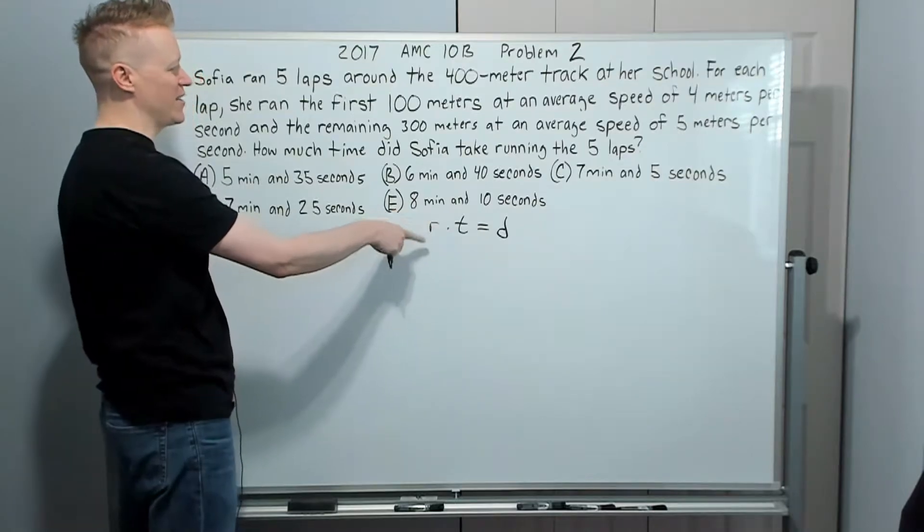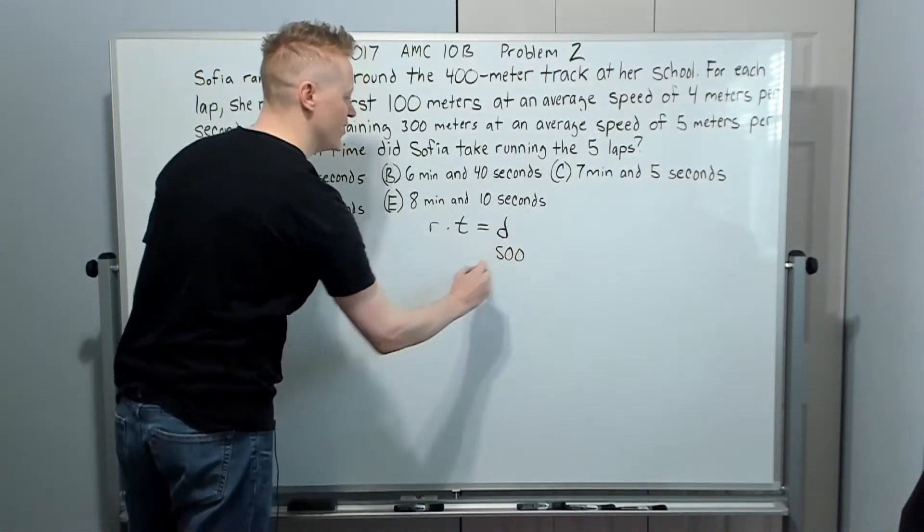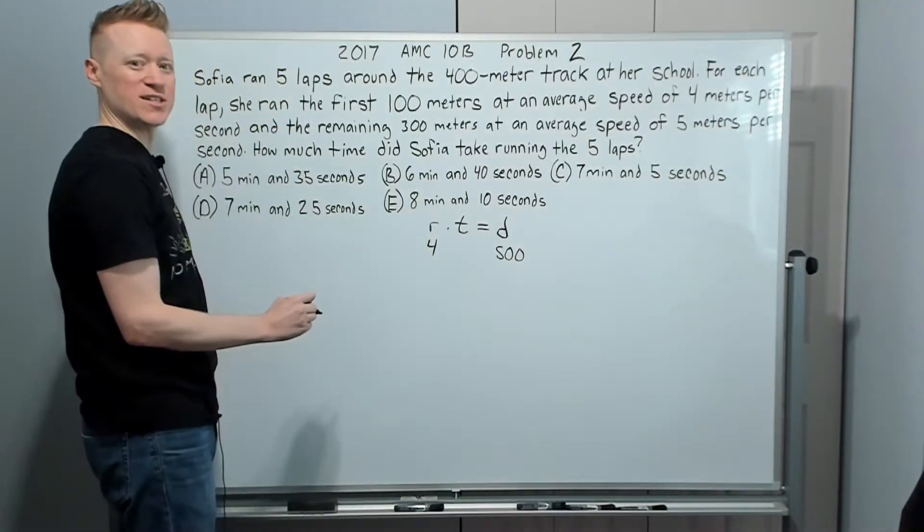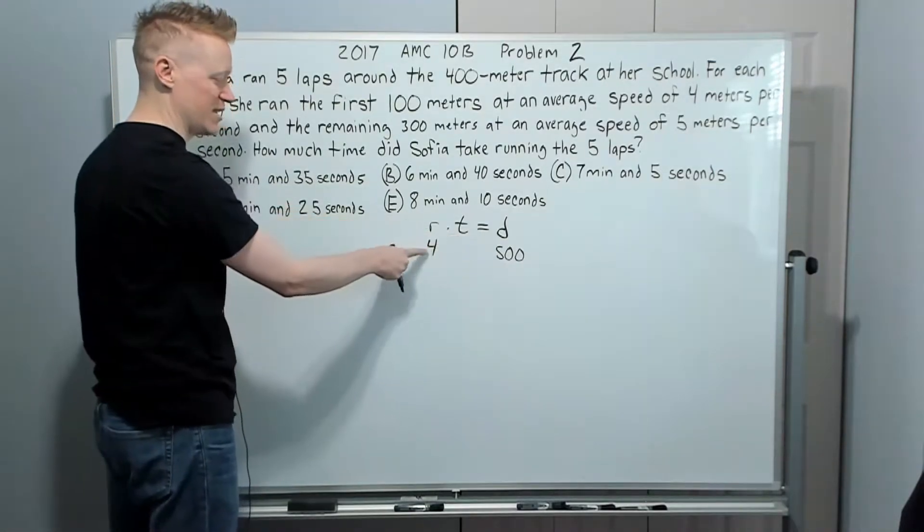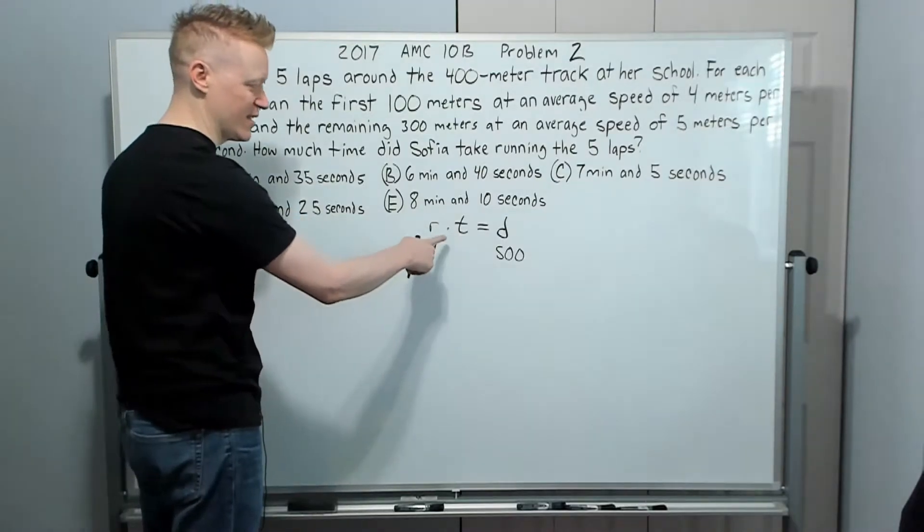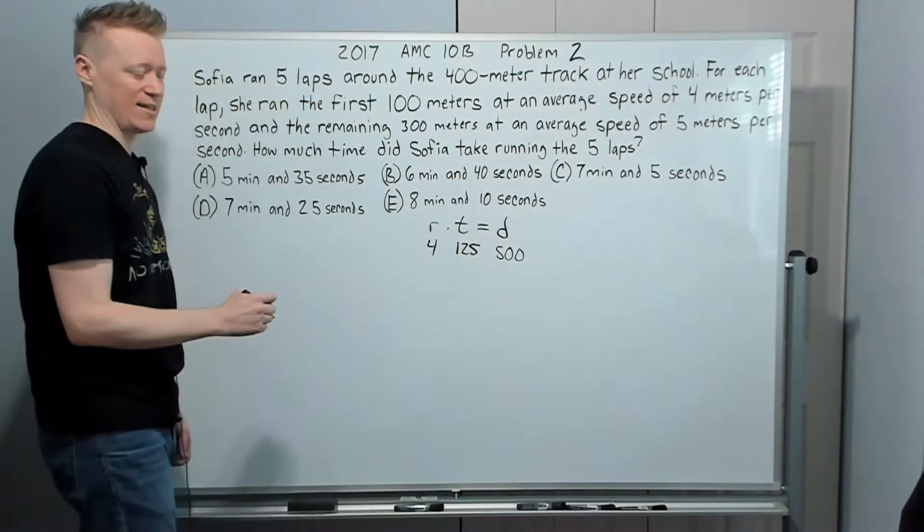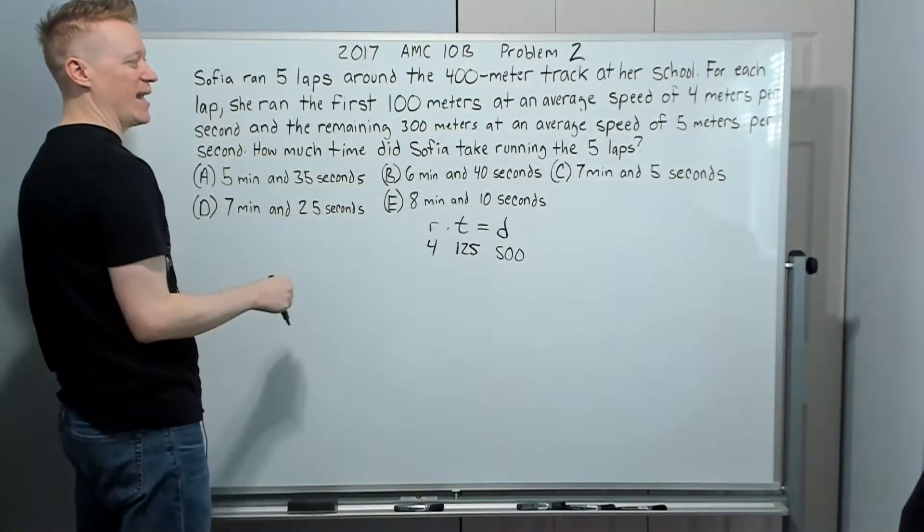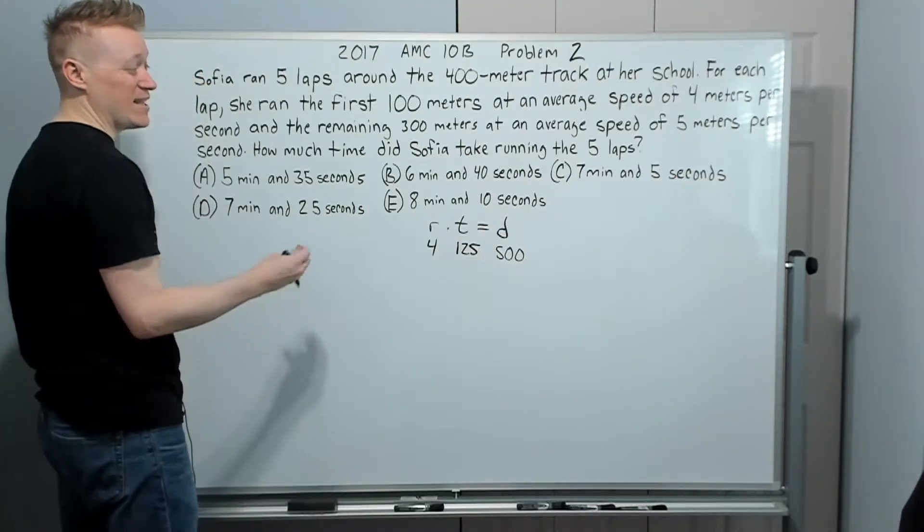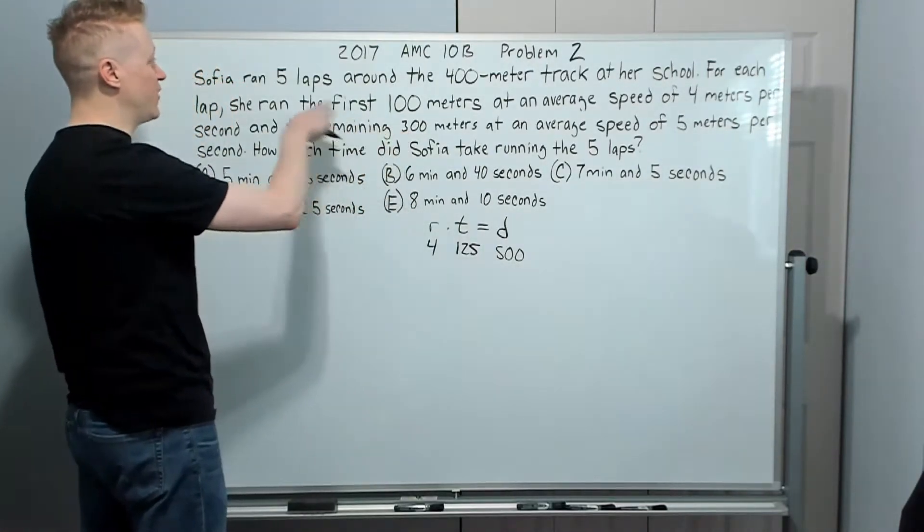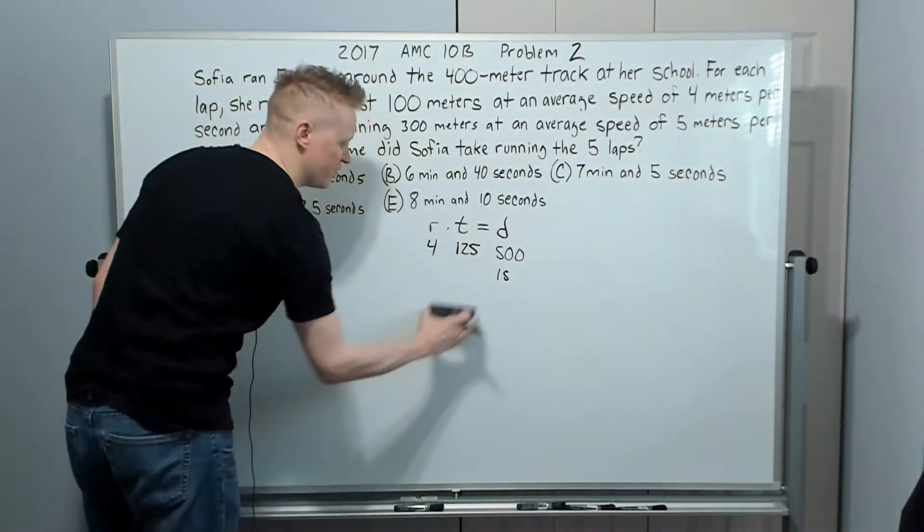Rate times time equals distance. We want to bring honor to our families, of course. So if she's running a hundred meters in five laps, that's 500 meters. So the distance she's going is 500 meters. The rate she's running it at is four meters per second. Keep in mind that the time in the rate is what the time will be based on here. So since this is four meters per second, the time will be in seconds. All you have to do is take the distance and divide by the rate to get the time. It's going to be 125 seconds.